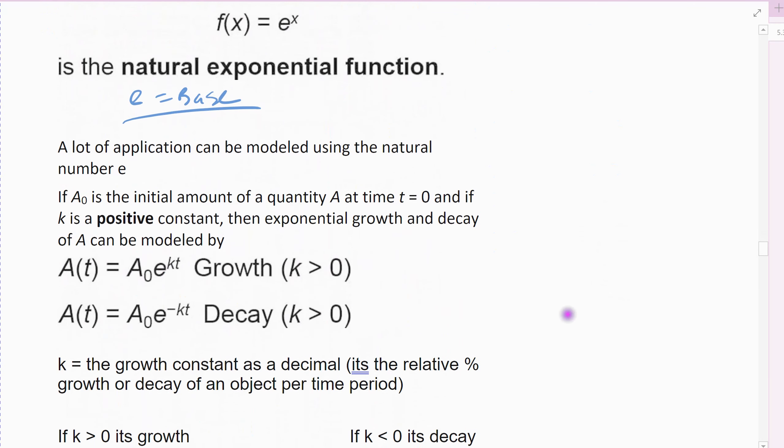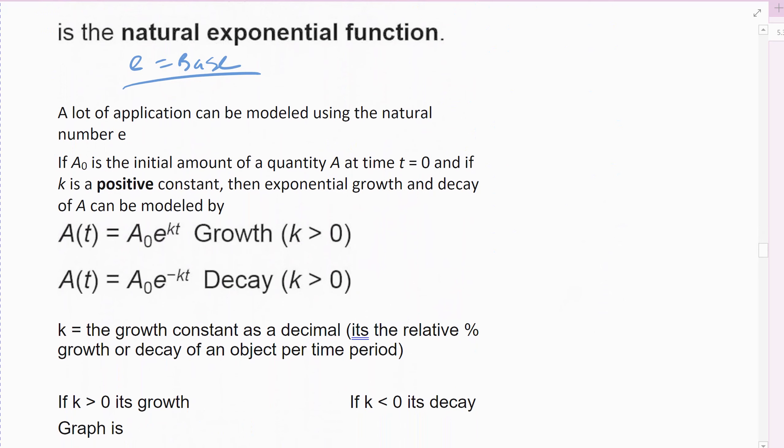A ton of applications are modeled using the natural number E. We're going to set up the natural exponential function. A naught (A₀), we just usually use A naught in science—it comes from science—naught always means initial value at time zero. So A naught just remember it means the same thing as that C we had earlier, it's the amount at time zero, initial amount.